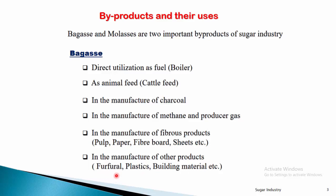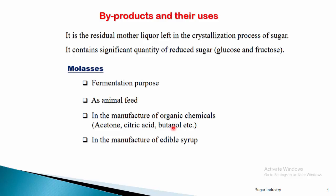Bagasse is also used in the manufacture of other products like furfural — which is an aldehyde, specifically 2-furancarboxy aldehyde. It is also used in the manufacture of plastics and building materials, where it serves as an adhesive or binder. These are the important applications of bagasse: fuel, animal feed, charcoal, methane and producer gas, fibrous products, furfural, plastics, and building material.